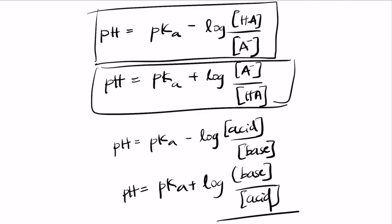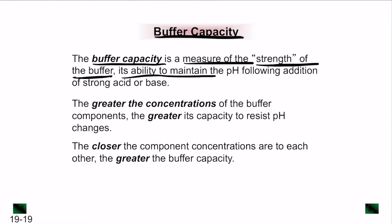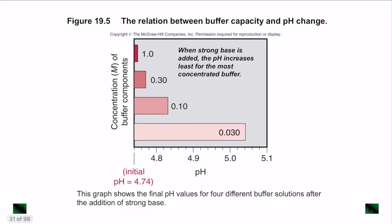Simplified: pH = pKa − log([acid]/[base]) or pH = pKa + log([base]/[acid]). Buffer capacity is the measure of the strength of a buffer — its ability to maintain pH when a strong acid or base is added. The greater the concentrations of the buffer components, the greater the capacity to resist pH changes. The closer the component concentrations are to each other, the greater the buffer capacity.